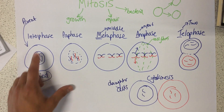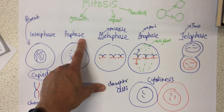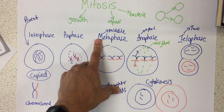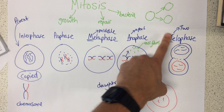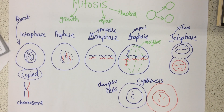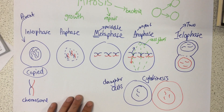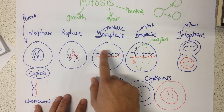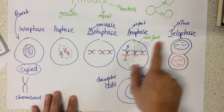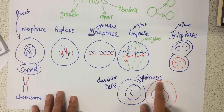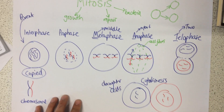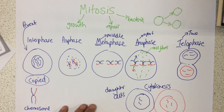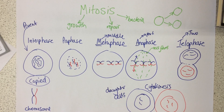So we have interphase, prophase, metaphase, anaphase, telophase, and cytokinesis. And this is what the chromosomes — the DNA — is doing at each stage. Thank you.